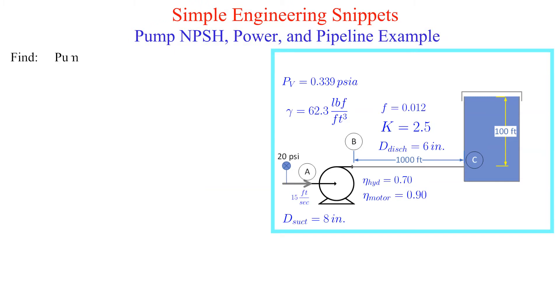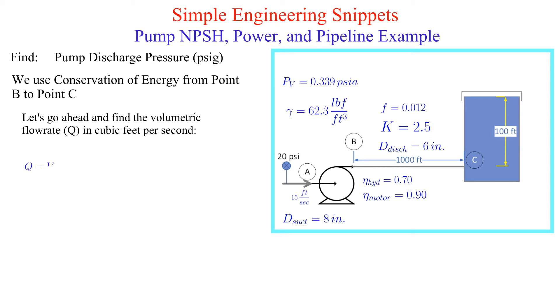Now let's work on finding the pump discharge pressure. We will apply conservation of energy from the discharge of the pump to the tank. Before we apply conservation of energy let's calculate the volumetric flow rate and the velocity in the six inch pipe.